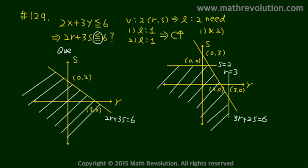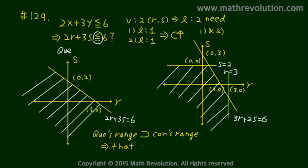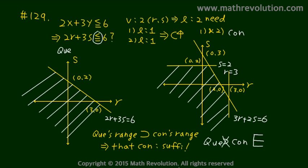When working with inequalities, we have to remember that if the question's range includes the condition's range, then the condition is sufficient. In our case, when we combine conditions 1 and 2, the condition's range is not inside the question's range. So E is our answer.